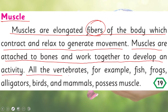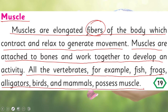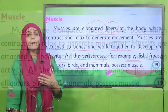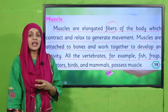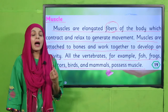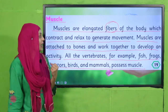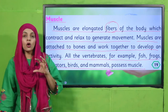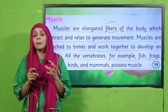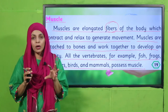All vertebrates — for example fish, frog, alligators, birds, and mammals — possess muscles. Muscles are elongated fibers; they cover and attach to your bones and help you in movement by contracting and relaxing. Muscles always work in pairs.